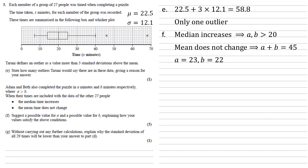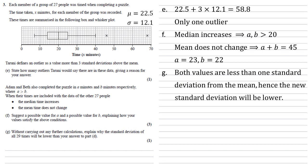Without carrying out any further calculations, we need to explain why the standard deviation of the current 29 values will be lower than the standard deviation found in part D. Well, we know that both values, the 23 and the 22, are less than one standard deviation from the mean. Our standard deviation is 12.1 away from the mean of 22.5. Hence the new standard deviation will be lower.